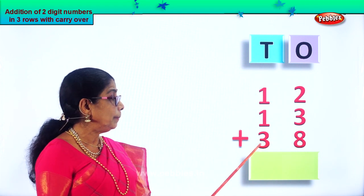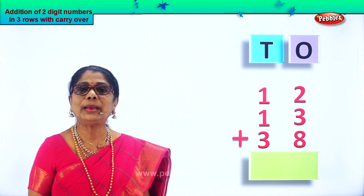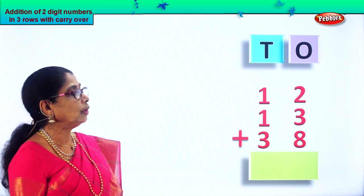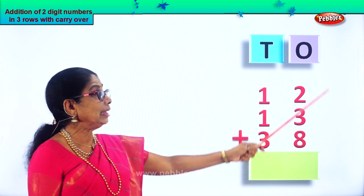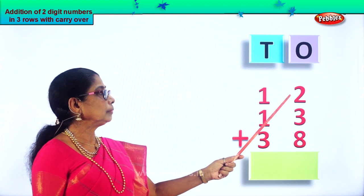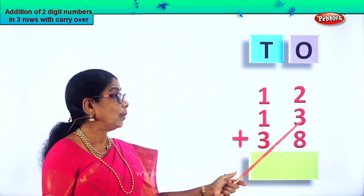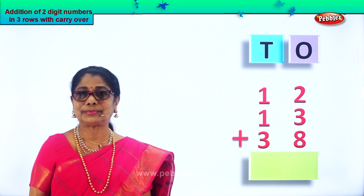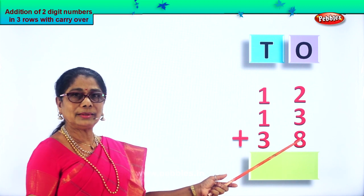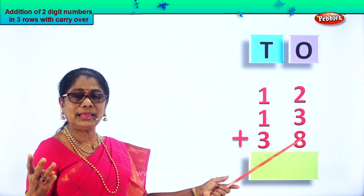We have twelve plus thirteen plus thirty-eight. What is twelve plus thirteen plus thirty-eight? Let's add all the ones. We have arranged them in ones and tens. Now: two ones plus three ones plus eight ones. Let's take the eight ones in the mind and three on your fingers.